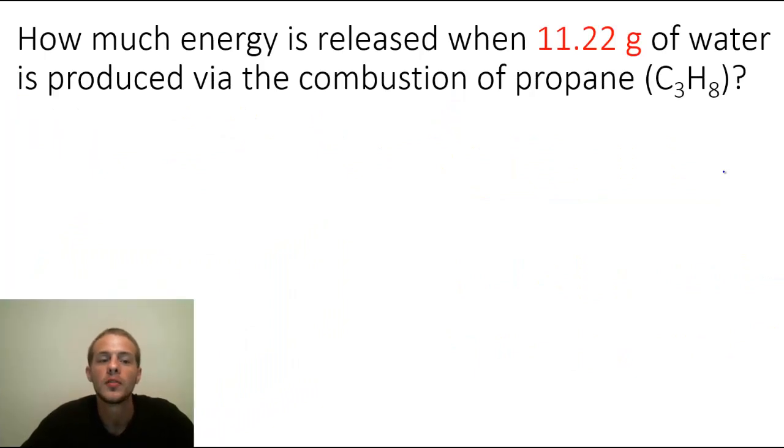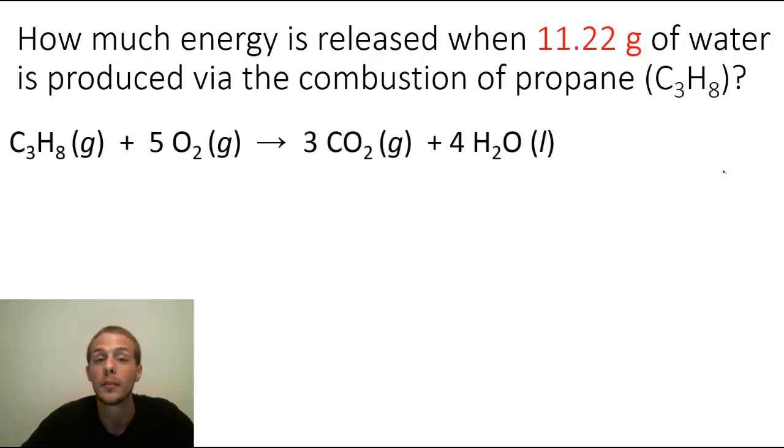So this problem says how much energy is released when 11.22 grams of water is produced via the combustion of propane. So again, we're going to use our balanced chemical equation that we just saw in the previous slide along with the delta H value, the negative 2,044 kilojoules. And so we start out with our 11.22 grams of water.